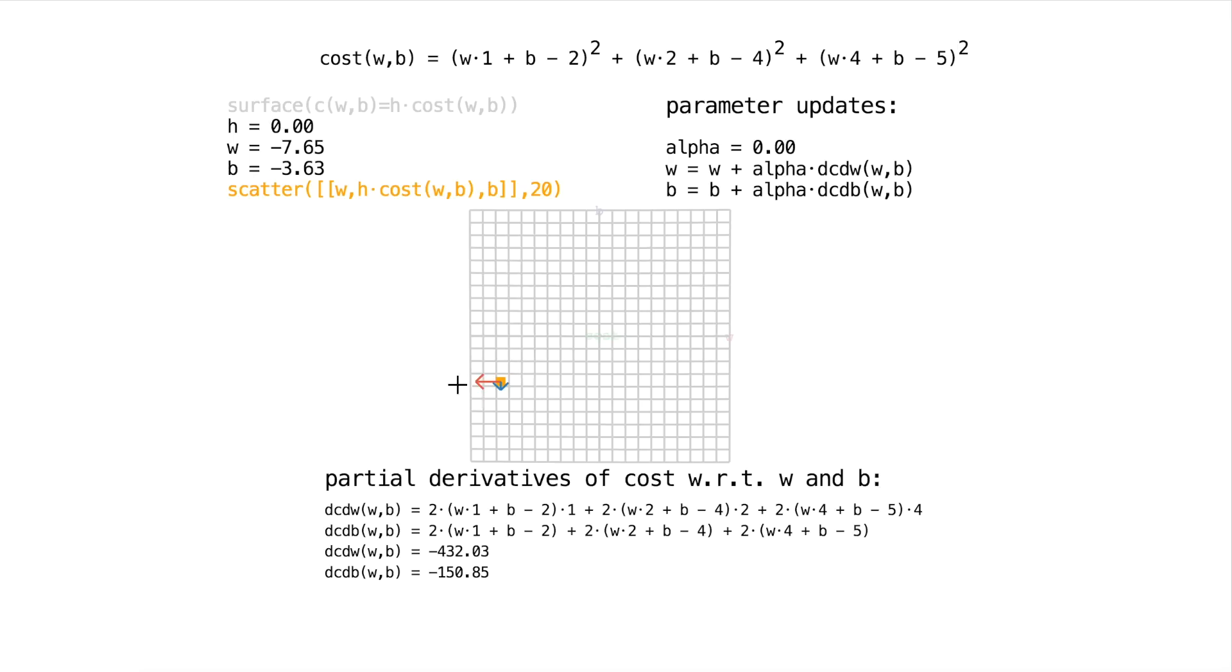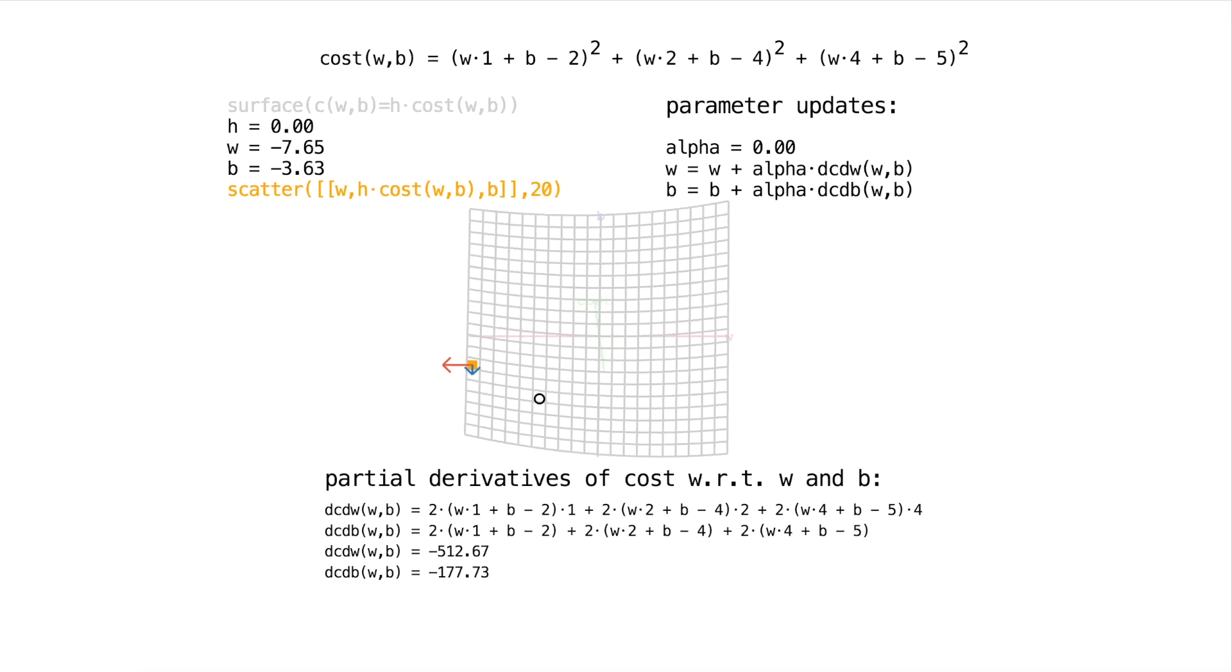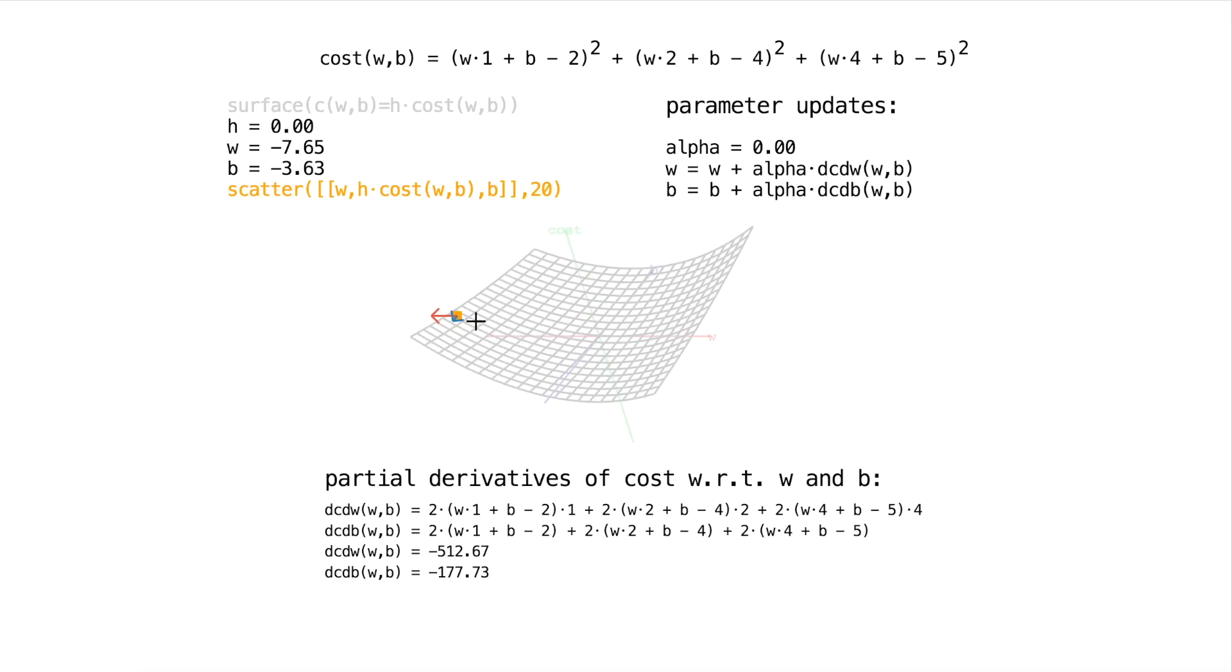So this is a direction of maximal increase. And if I change w by saying, I'm going to add a small fraction of the derivative of the cost with respect to w, you can see we're going to take a step over here and we're going to start to shoot off of the surface. And you can see it's like we're climbing this hill here. And I can do the same for b. So we'll move in that direction, we'll move in this direction. And now we're shooting off the surface and we'll continue to shoot way up and up and up and it will always increase.